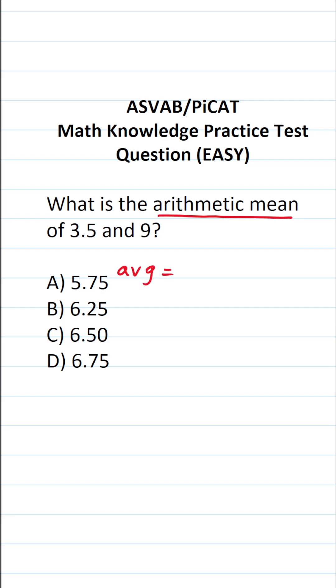To find the average of any numbers that you're given, you're going to add those numbers up. That is to say you're going to find their sum. And then you're going to divide that sum by the number of things that you added together.